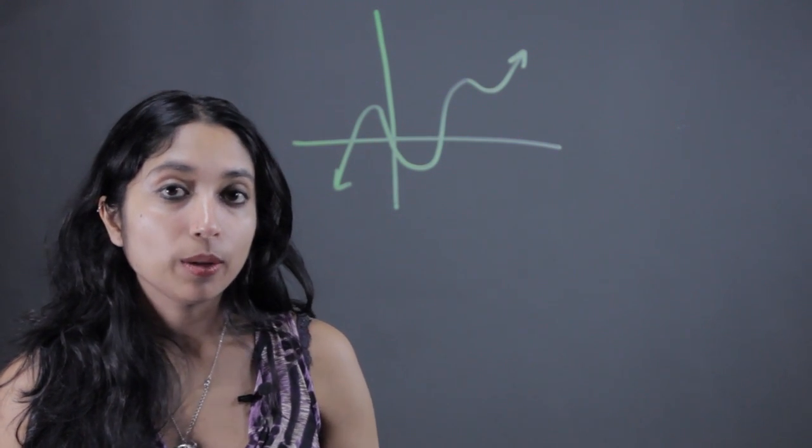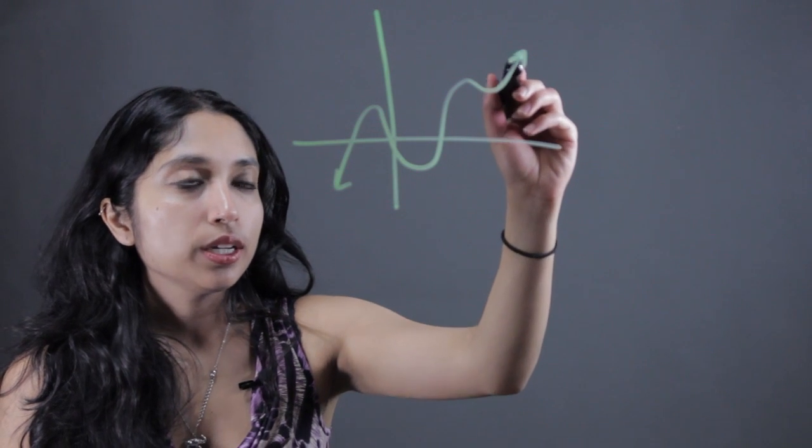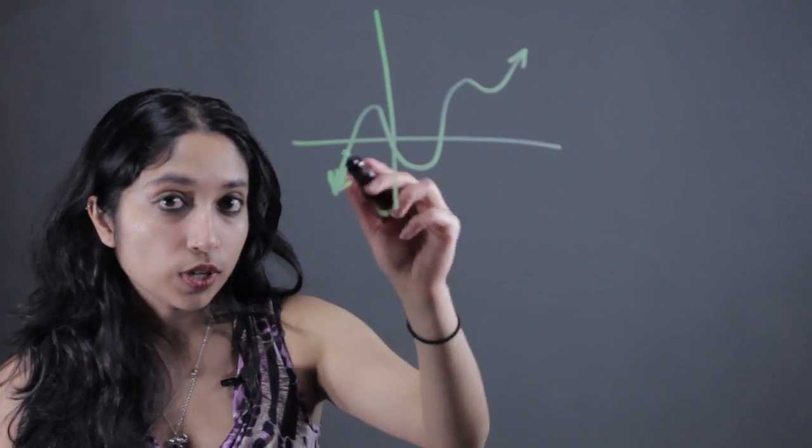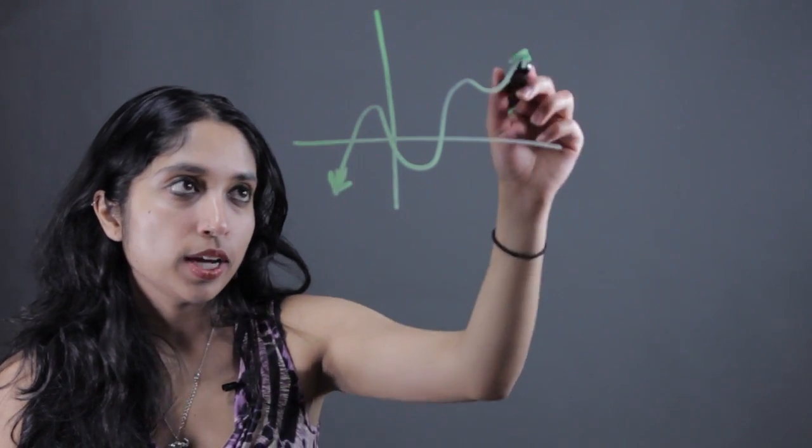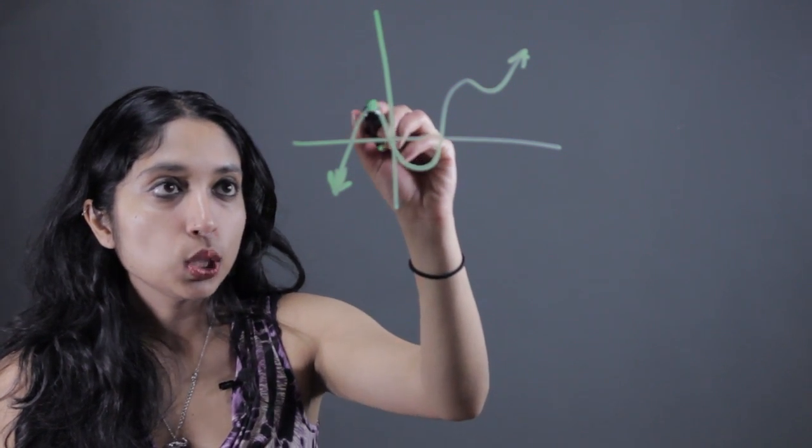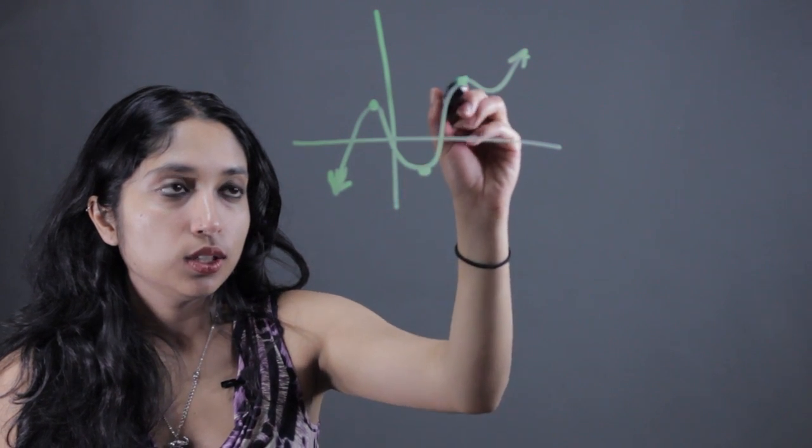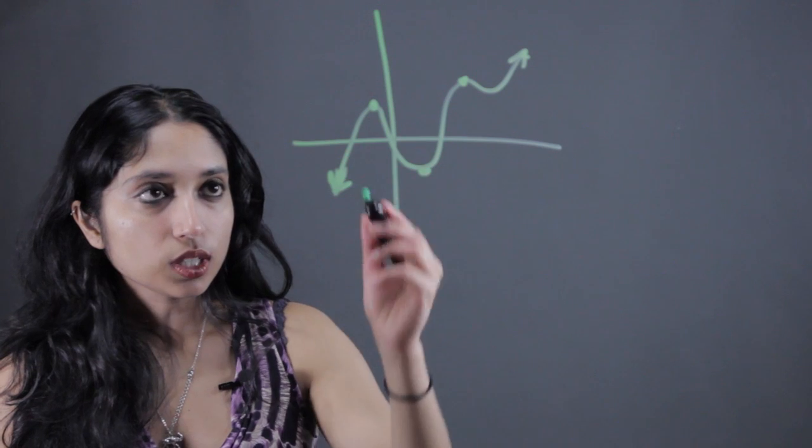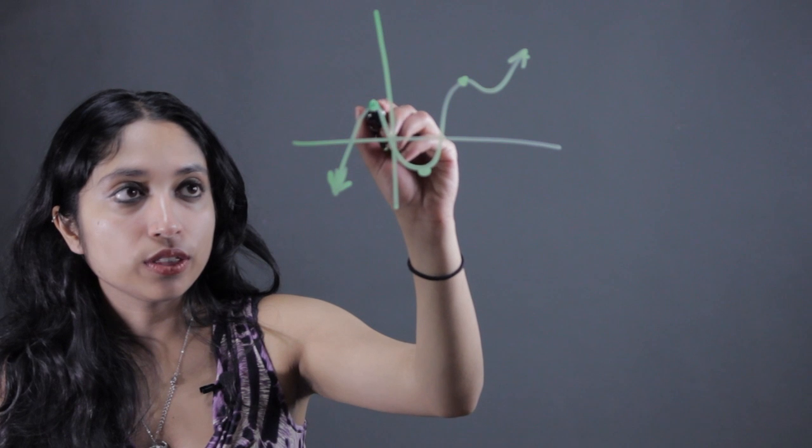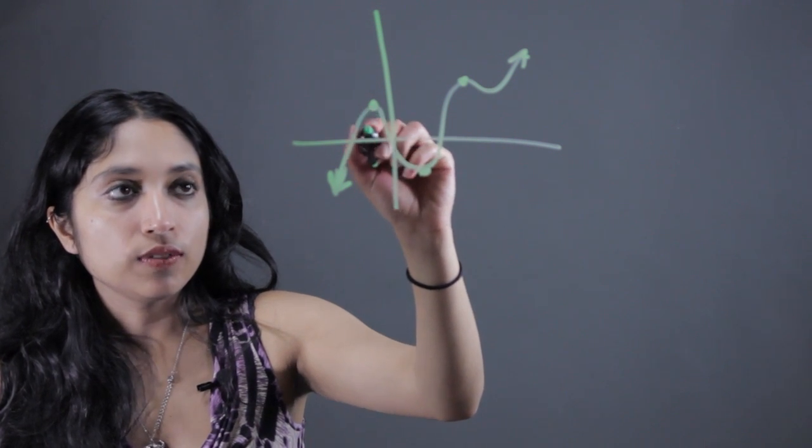Often times when we're talking about peaks and valleys, we're not talking about the absolute maximum or the absolute minimum because the function is often going to be extending towards positive and negative infinity. What we're generally talking about is localized maxima and localized minima. And the definition for that is the highest value that the function reaches within a given interval.